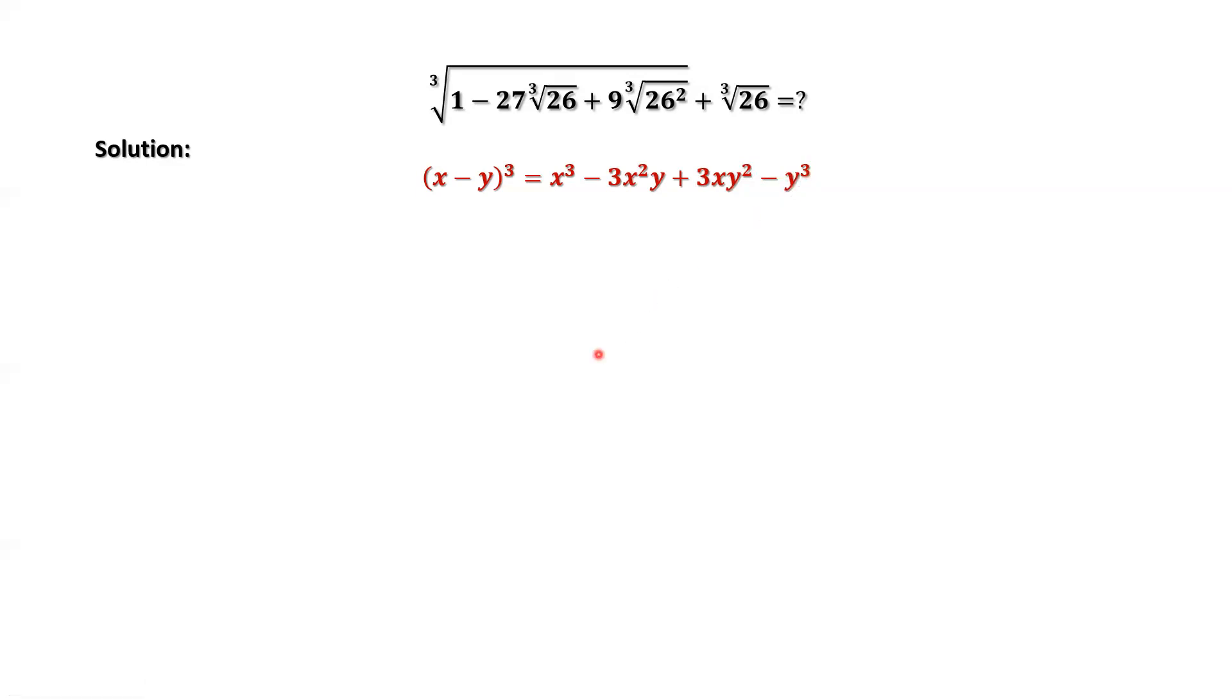How to apply this formula? We consider the inside part of the third root sign. 1 minus 27 times the third root of 26 plus 9 times the third root of 26 squared equals 27 minus 27 times the third root of 26 squared,